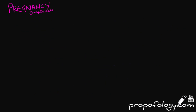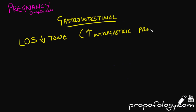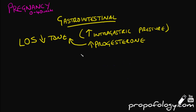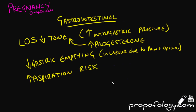In the gastrointestinal system, there is lower oesophageal sphincter tone due to progesterone. Barrier pressure reduces due to increased intragastric pressure from the gravid uterus. Gastric emptying itself is reduced, particularly during labour due to pain and the effects of opioids like diamorphine. The risk of aspiration increases, and this returns to normal levels about 48 hours postpartum.